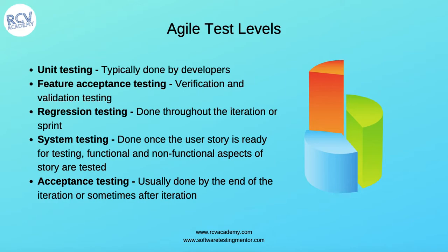In agile, automation around acceptance testing criteria and regression testing is important to achieve full coverage with incremental builds. Feature validation testing involves confirming whether the feature being developed is fit for use by end users and customers. This is often done manually by developers, testers, business analysts, or acceptance testing stakeholders.